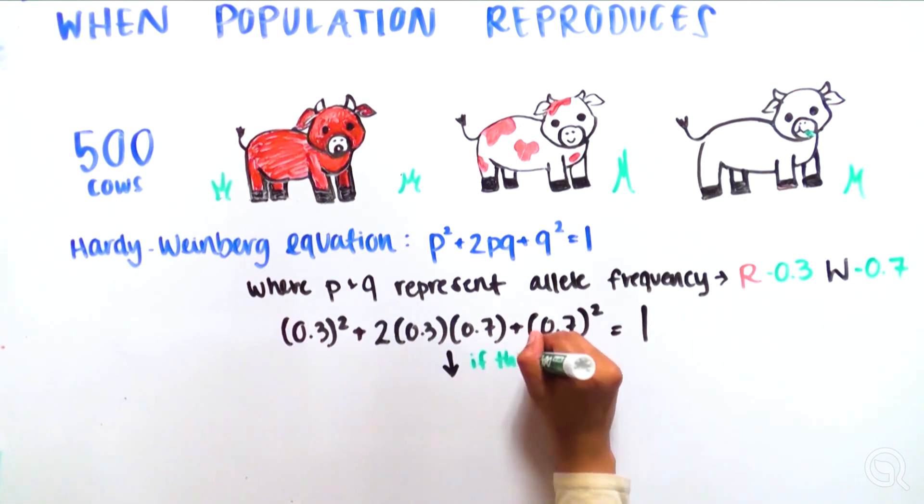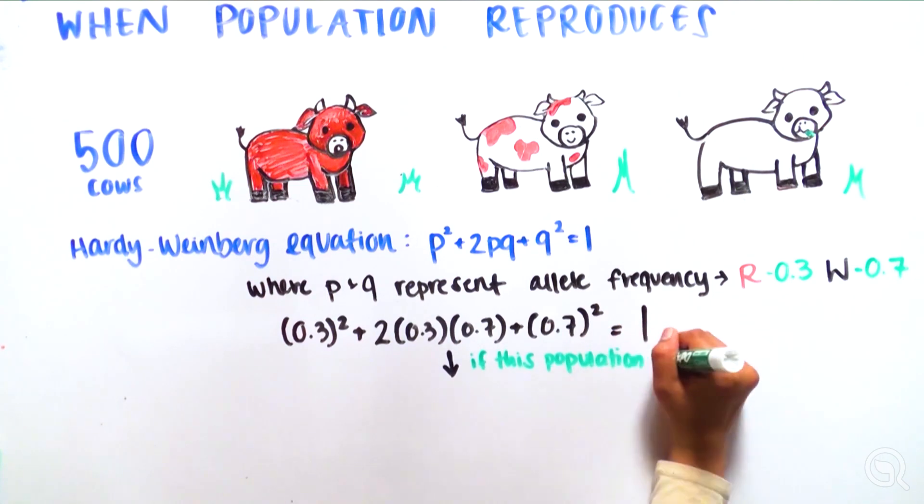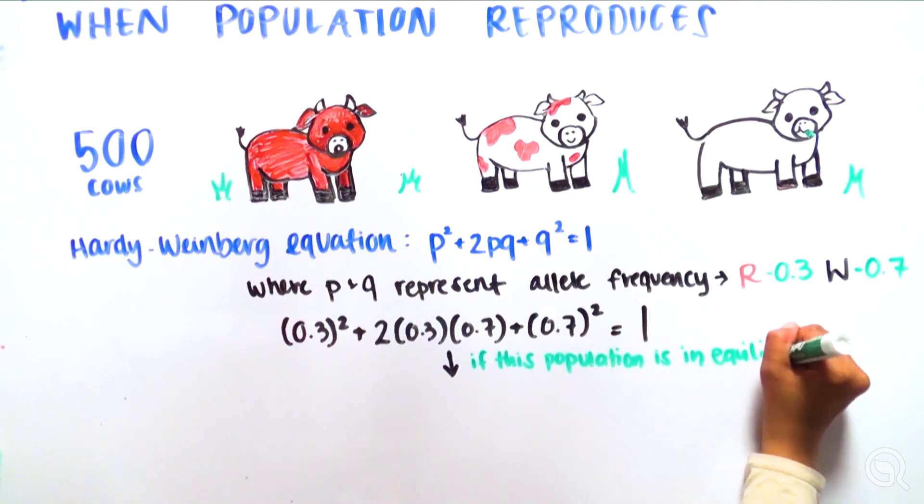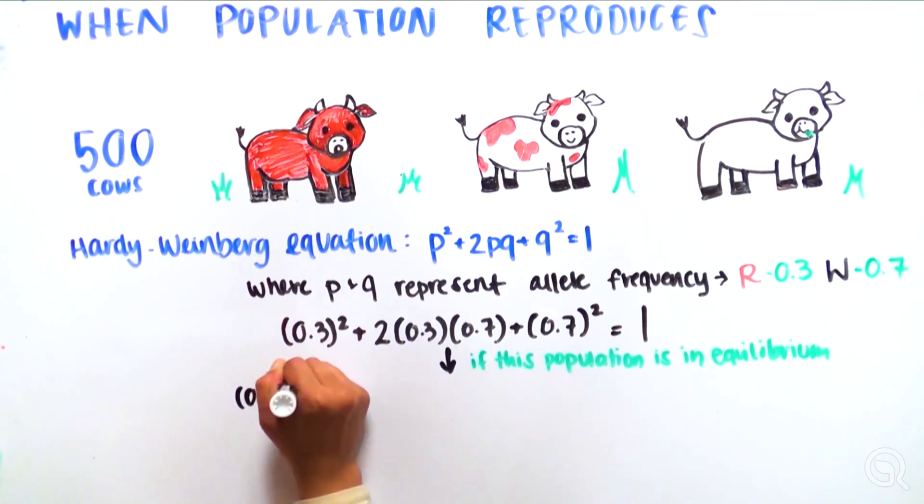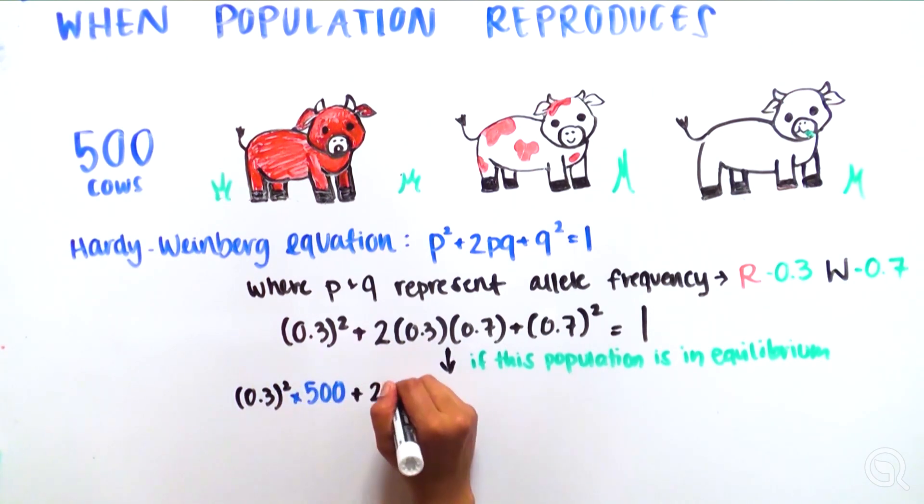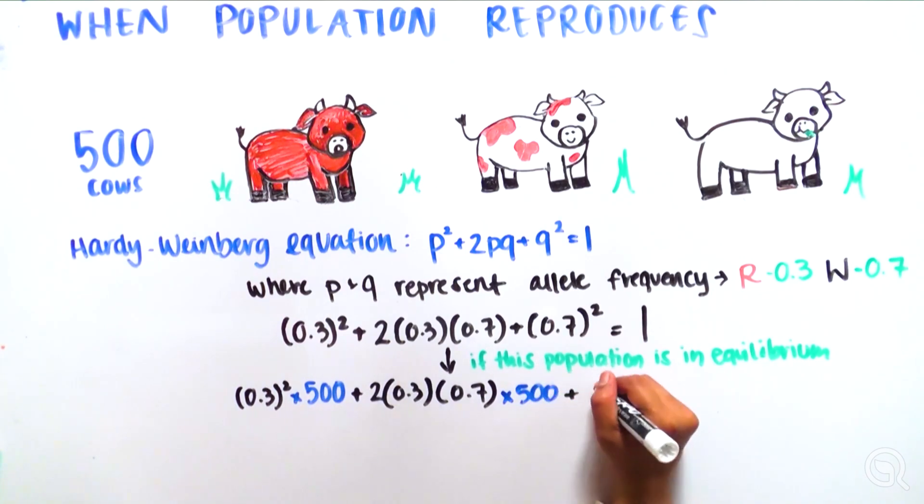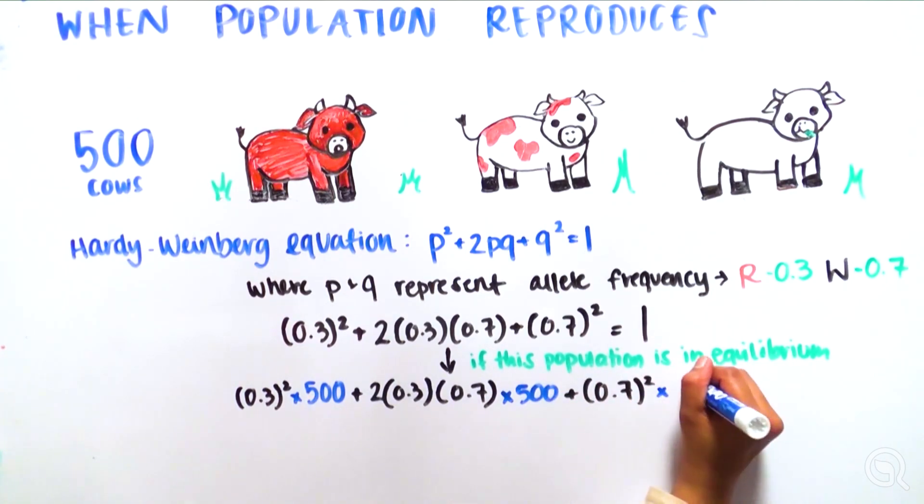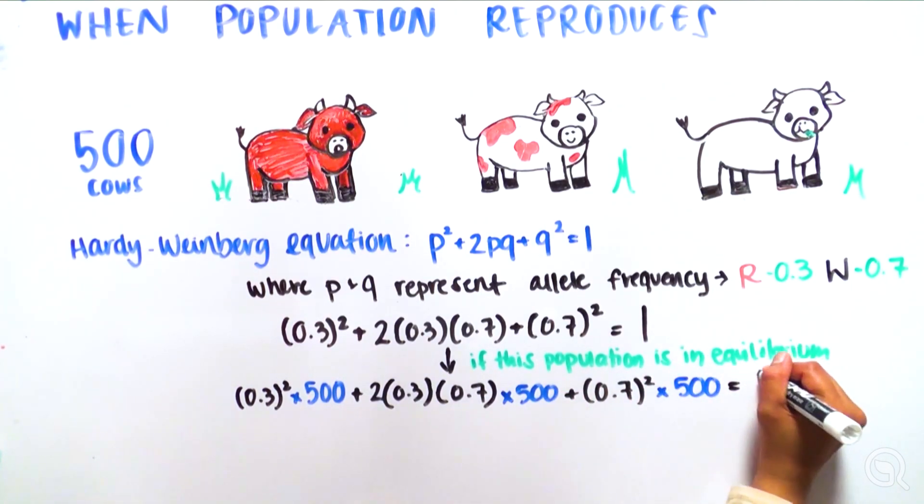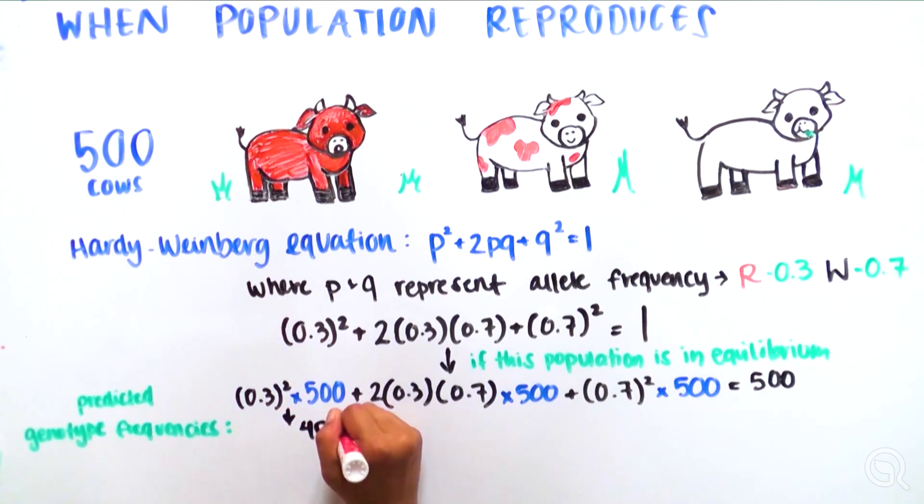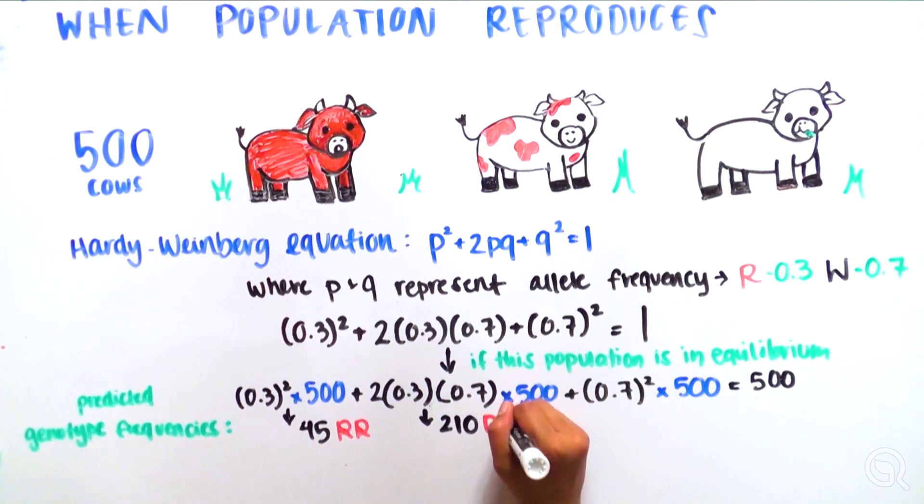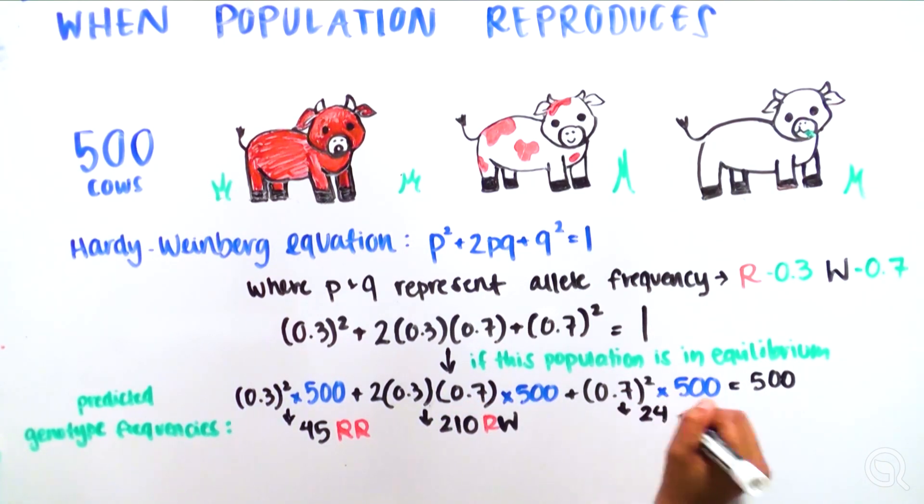Thus, if the alleles of this gene in the population of 500 cows are in equilibrium, we would expect to see 0.3² × 500 + 2(0.3)(0.7) × 500 + 0.7² × 500 = 500, equaling 45 RR (red) cows, 210 RW (roan) cows, and 245 WW (white) cows.